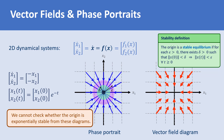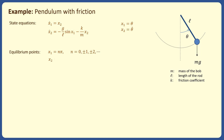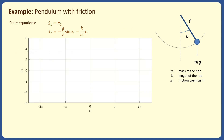Let's go to the pendulum with friction example studied earlier in the equilibrium points video. The state equations of the system are given in this form, where x1 is the angle theta and x2 is theta-dot. This system has equilibrium points at x1 equals n-pi, where n is an integer, and x2 equals 0. The equilibrium points are shown in the x1-x2 plane, also known as the state plane or the phase plane.